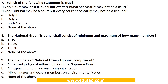MCQ 7: Which of the following statements is true? (1) Every court may be a tribunal but every tribunal necessarily may not be a court. (2) Every tribunal may be a court but every court necessarily may not be a tribunal. Options: A. Only one, B. Only two, C. Both one and two, D. None of the above. The correct answer is A. Only one.